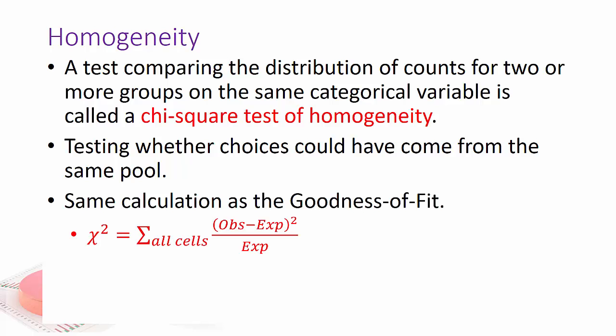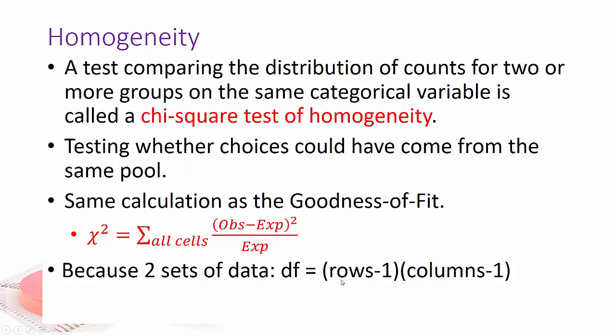It uses the same calculation as the goodness of fit, which is chi-squared is the sum of all the cells of observed minus expected squared divided by the expected value. Now because we have two sets of data, our degrees of freedom changes a little bit. It's basically the rows in your table minus one times the columns minus one, so it's a product of those two.